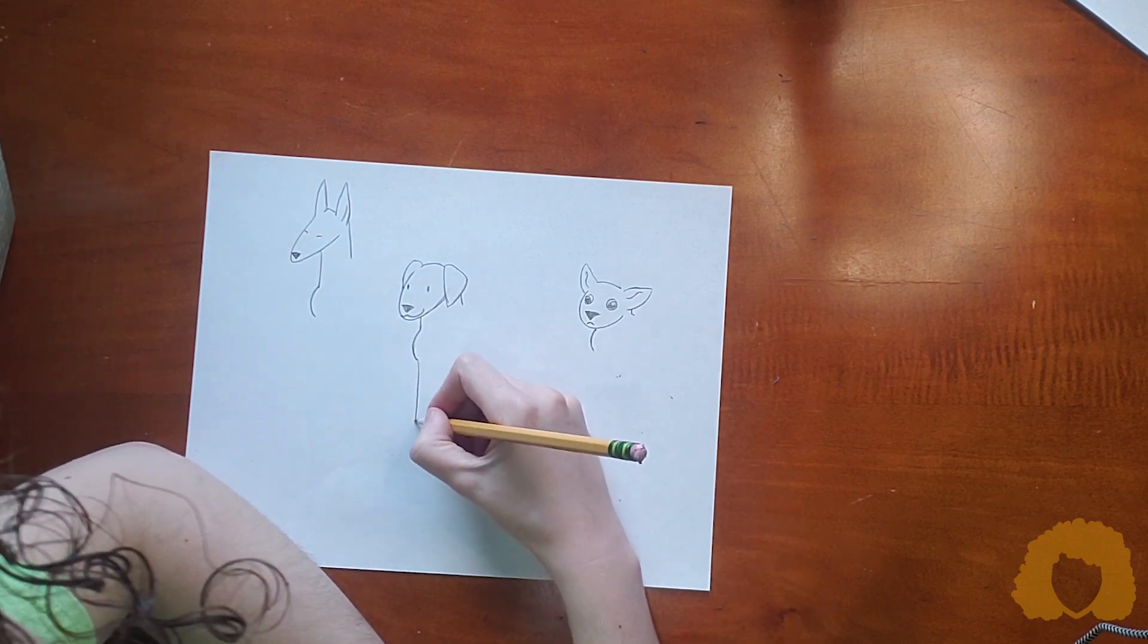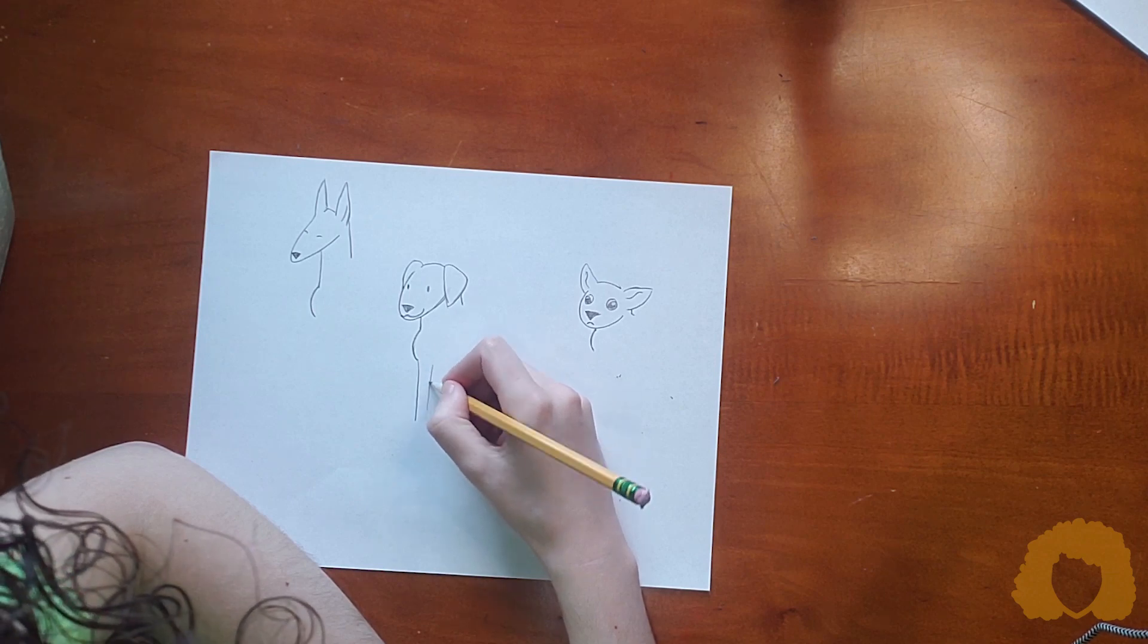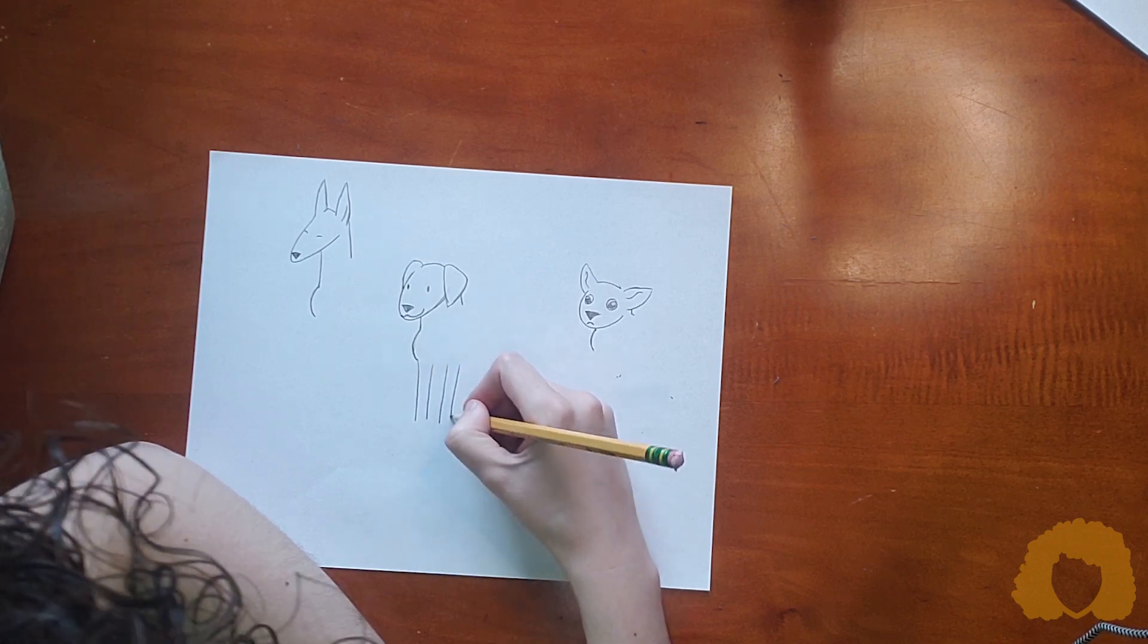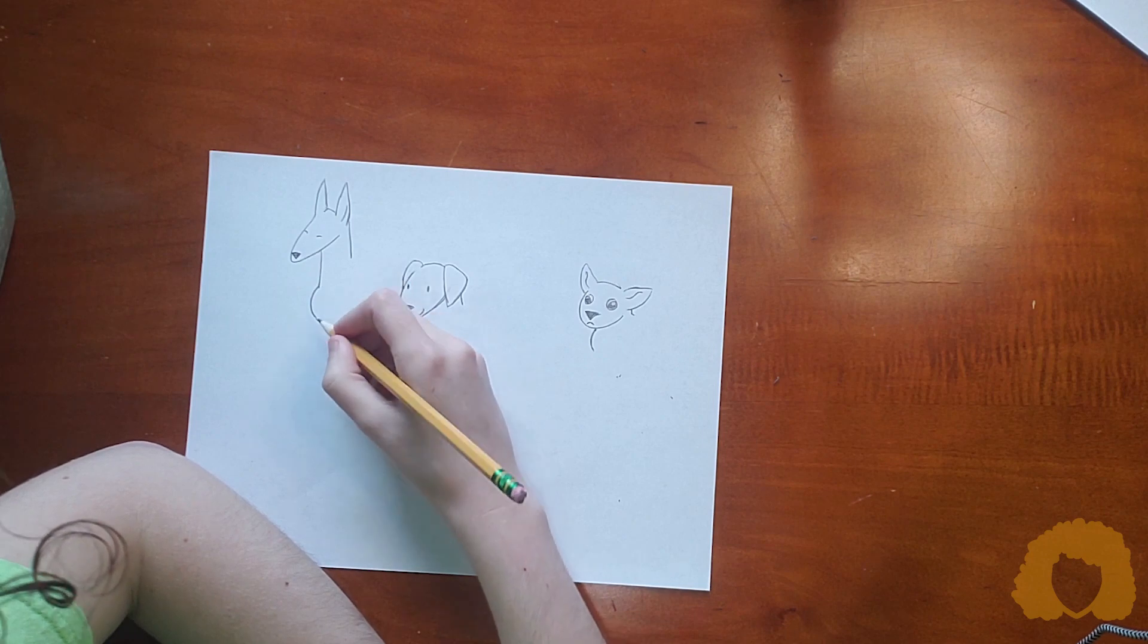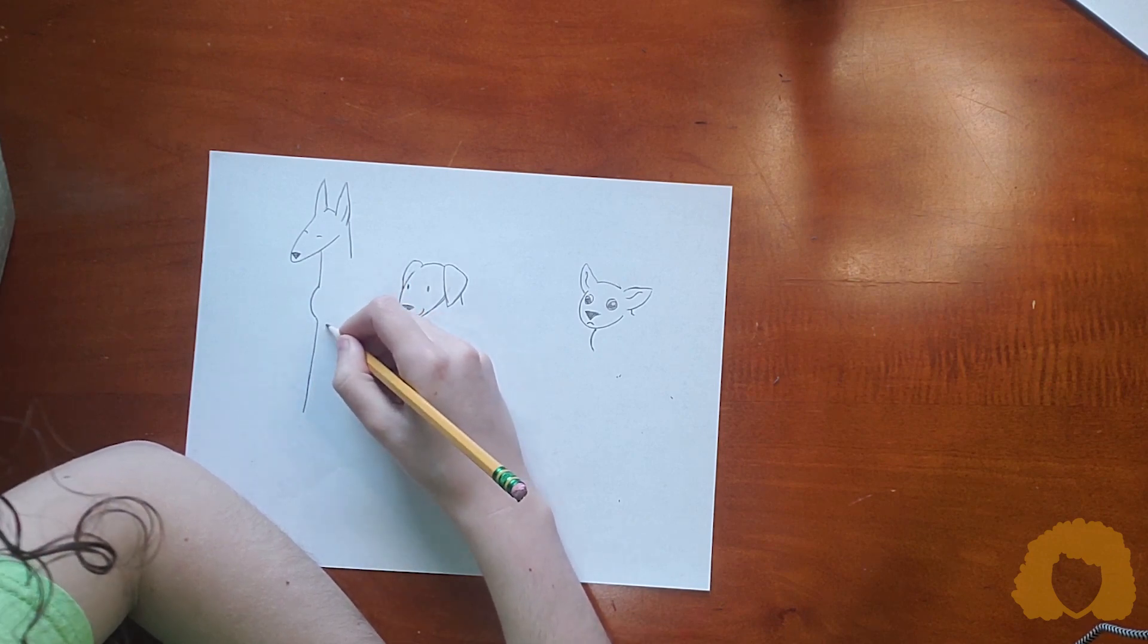And then two straight lines for the legs, which again are going to vary in length depending on your dog.